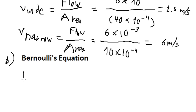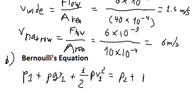We have P1 plus ρgY1 and we have 1 over 2 ρV1 squared equal to P2 plus ρgY2 plus 1 over 2 ρV2 squared.